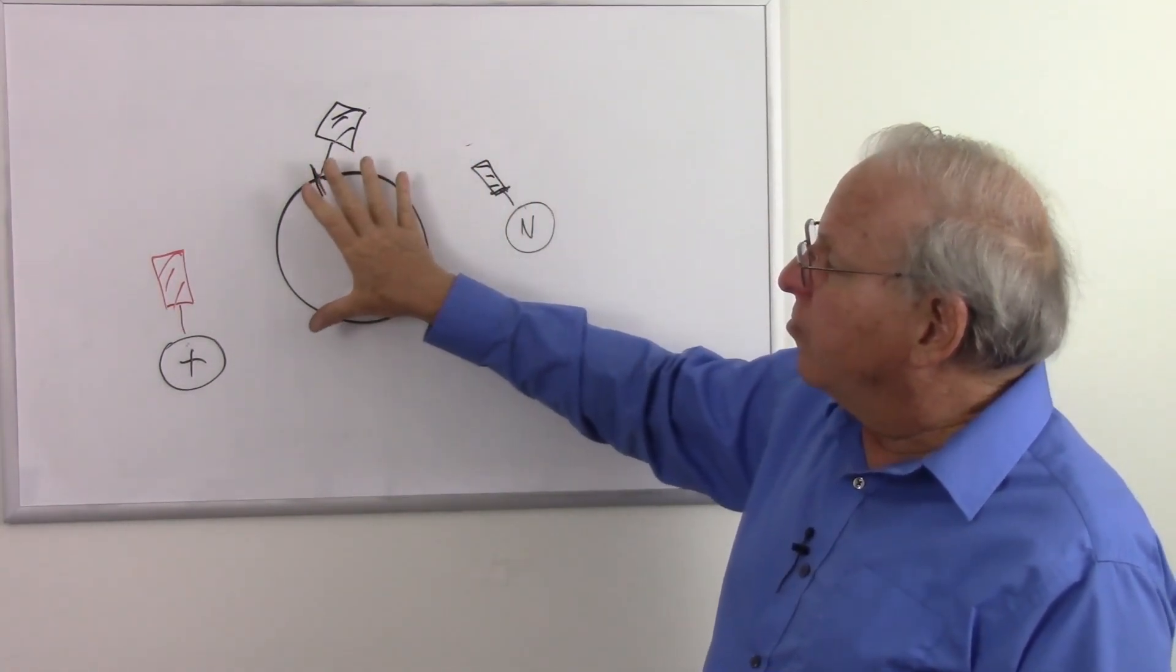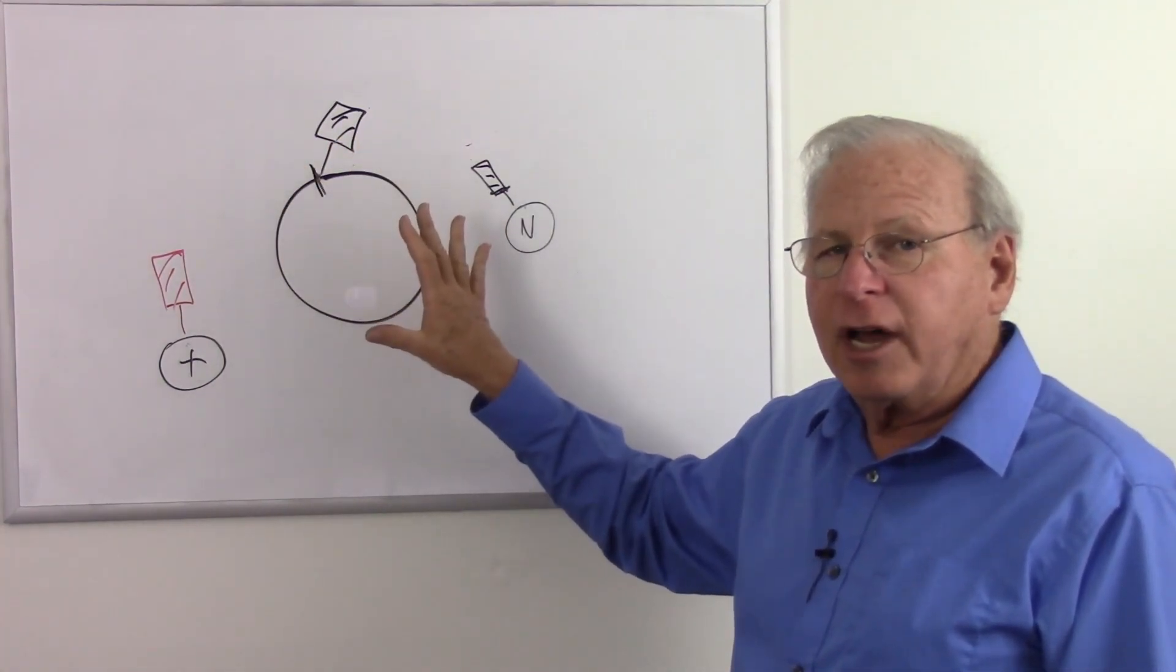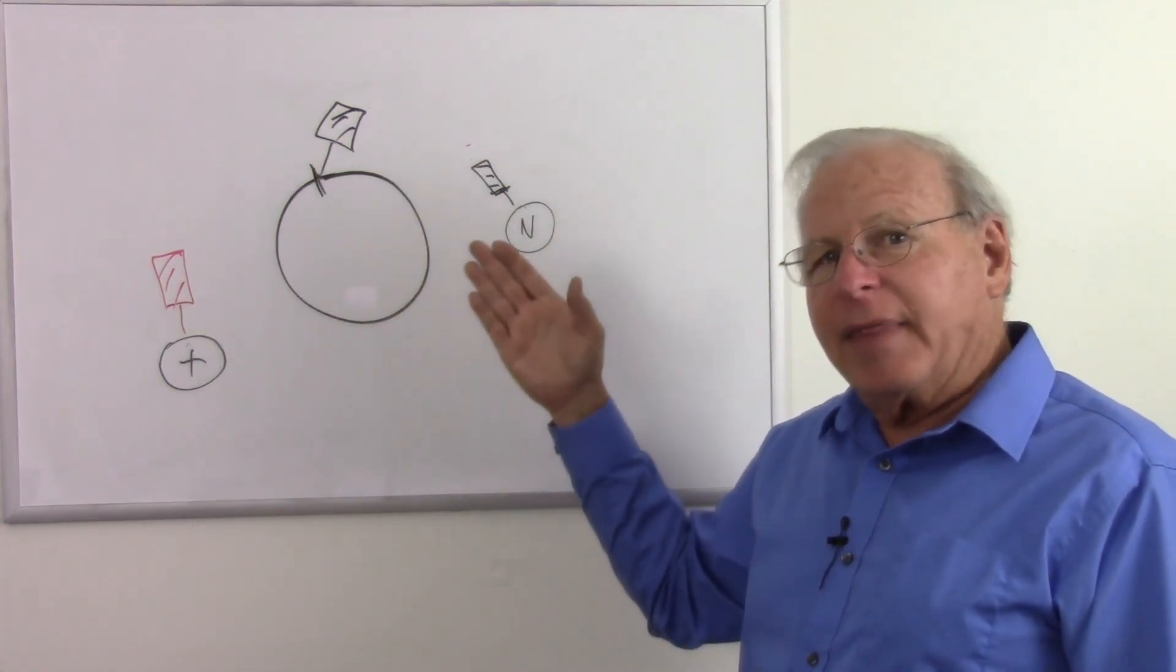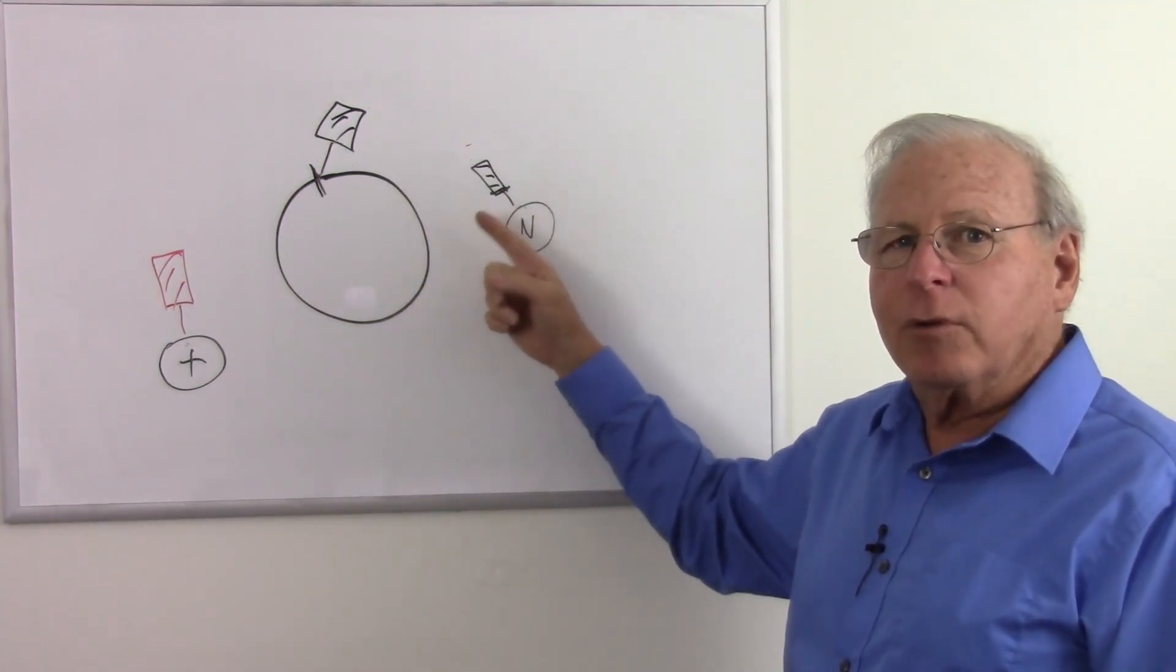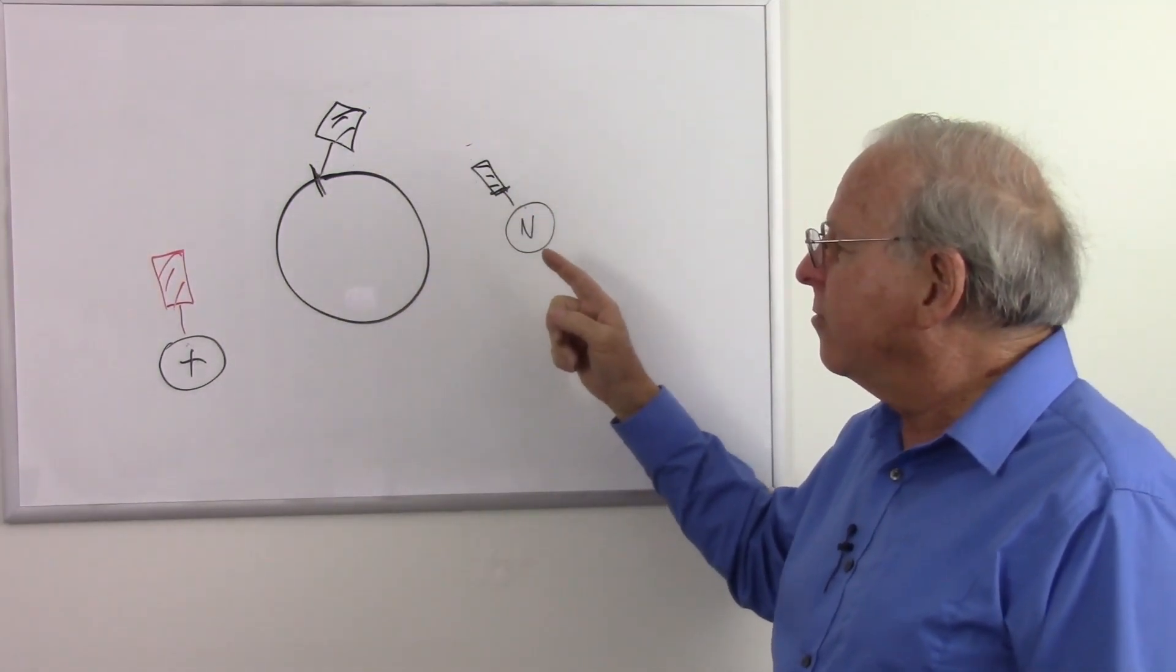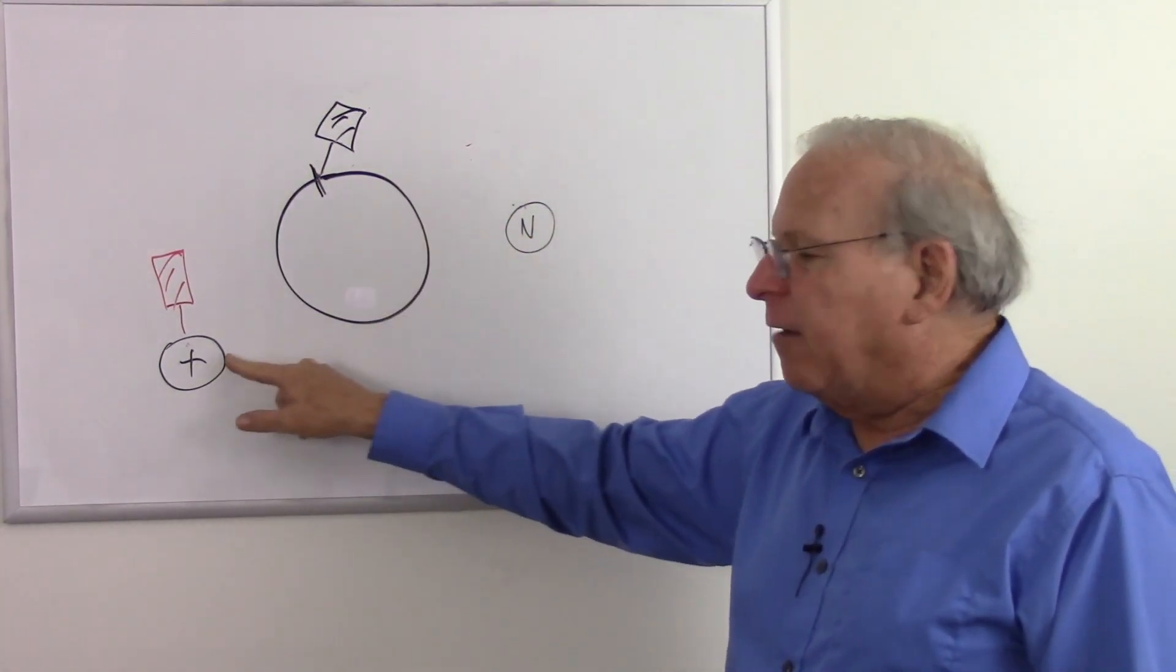But if we want to say that the Earth is negatively charged because there's more electrons than protons, we are implying that it's negatively charged compared to a body that has equal number of electrons and protons. In that case, this would now be our zero volts. This would be negative and that would be positive.